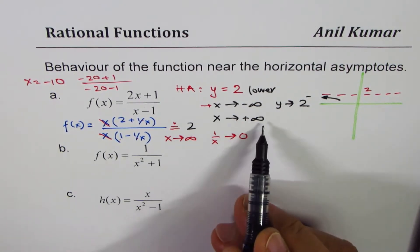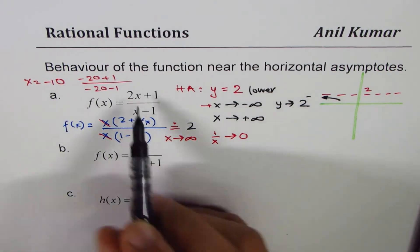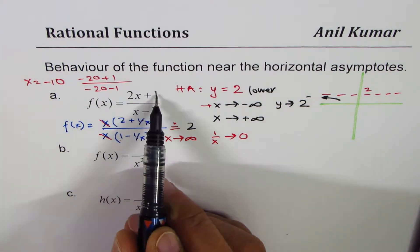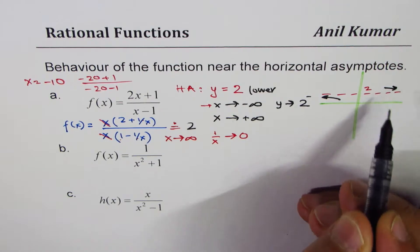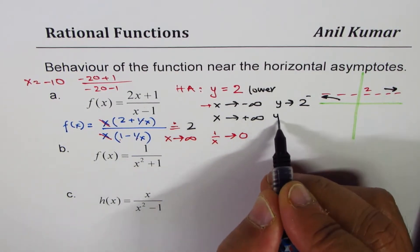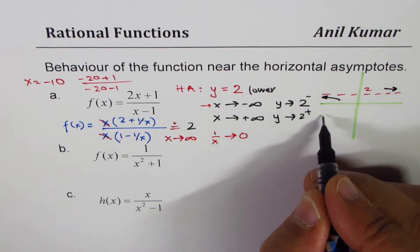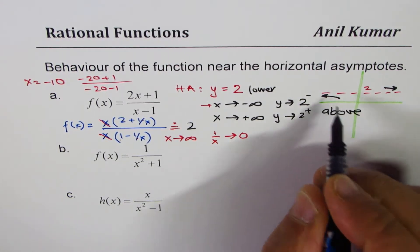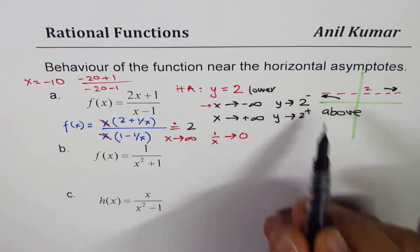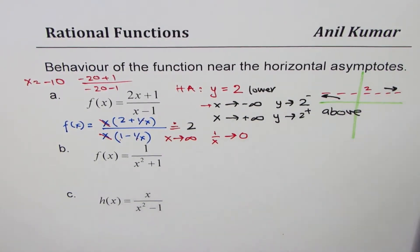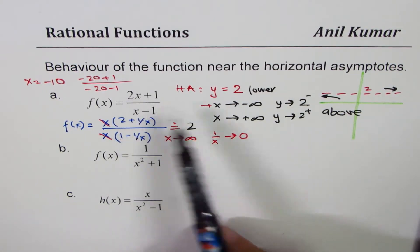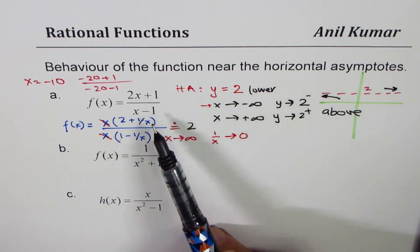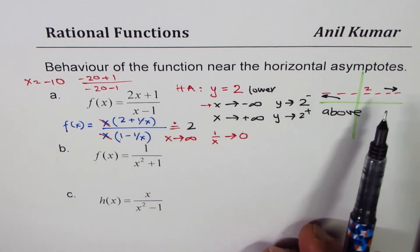Now what happens when x approaches positive infinity? You can substitute plus 10. So if I write plus 10, we get 21 over 9, which is more than 2. So it is approaching from above. We say y is approaching 2 from above. You can always sketch this function by finding intercepts and the vertical asymptote at 1, but we'll just discuss the horizontal asymptote.